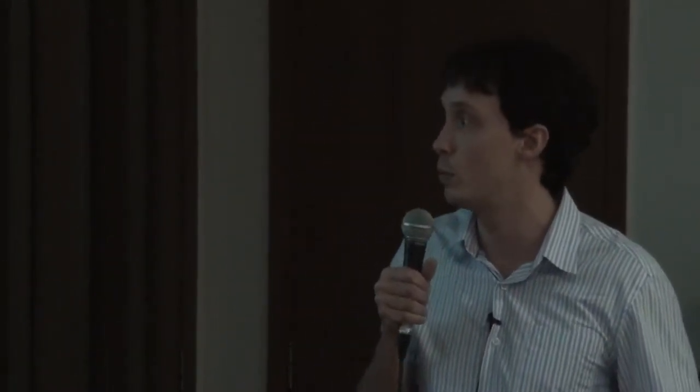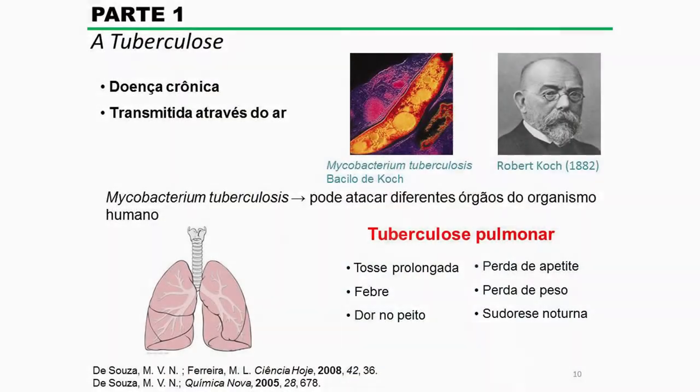Na primeira parte, o foco principal foi a tuberculose, que é uma doença crônica transmitida através do ar e causada pelo Mycobacterium tuberculosis, também conhecido como bacilo de Koch, em homenagem ao cientista alemão Robert Koch, que foi o primeiro a isolar e identificar essa bactéria. O Mycobacterium tuberculosis pode atacar diferentes órgãos do organismo humano; no entanto, os pulmões são os órgãos mais afetados. Alguns sintomas dessa doença incluem tosse, febre, perda de apetite e perda de peso.